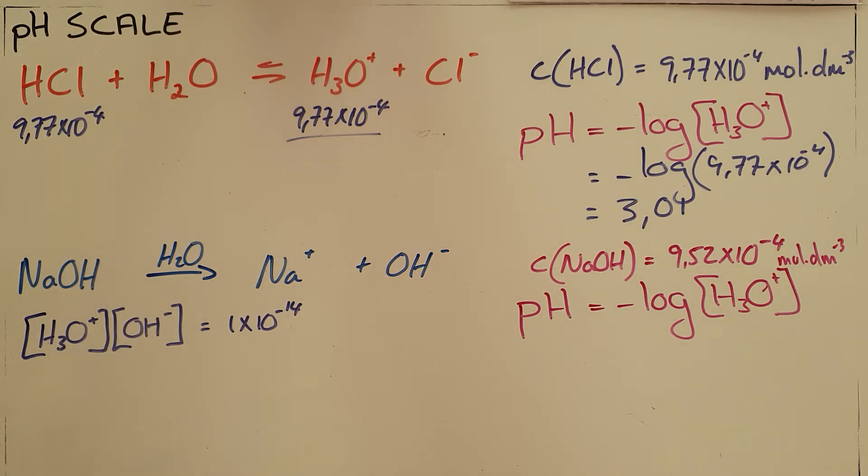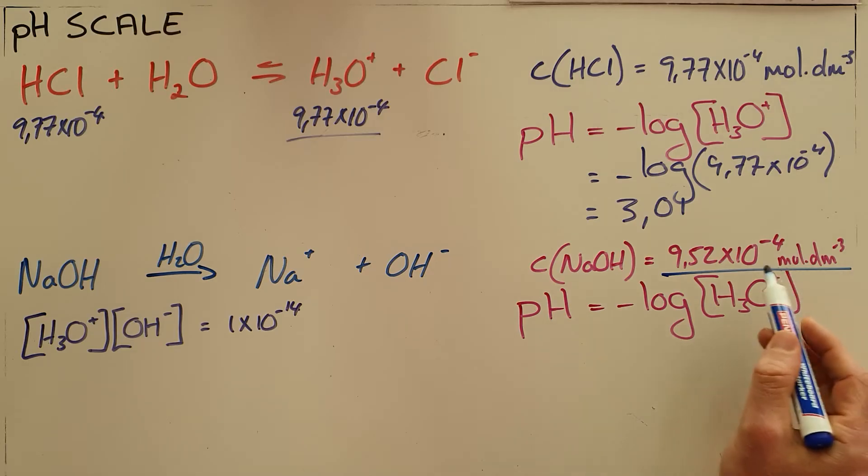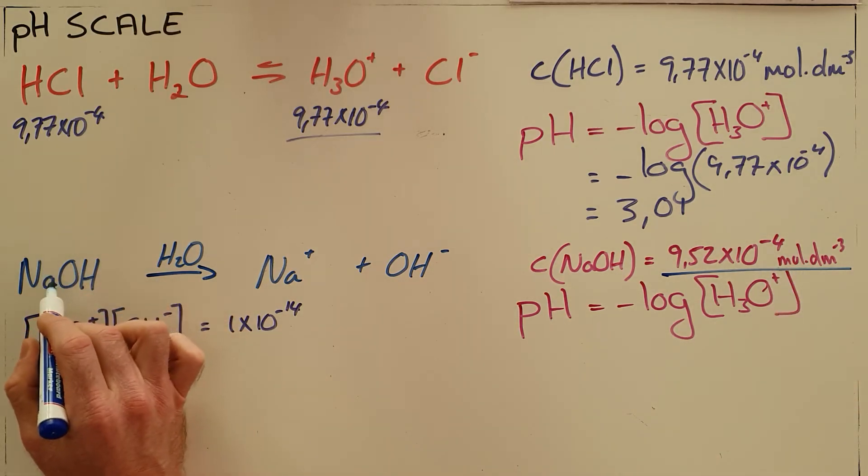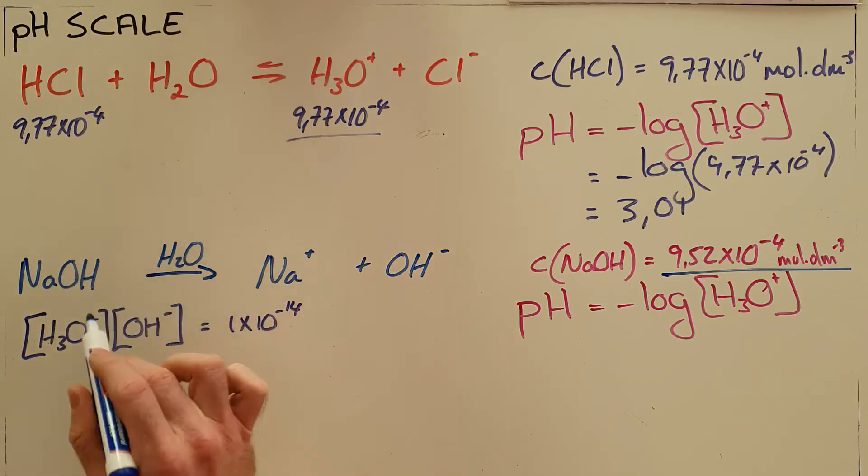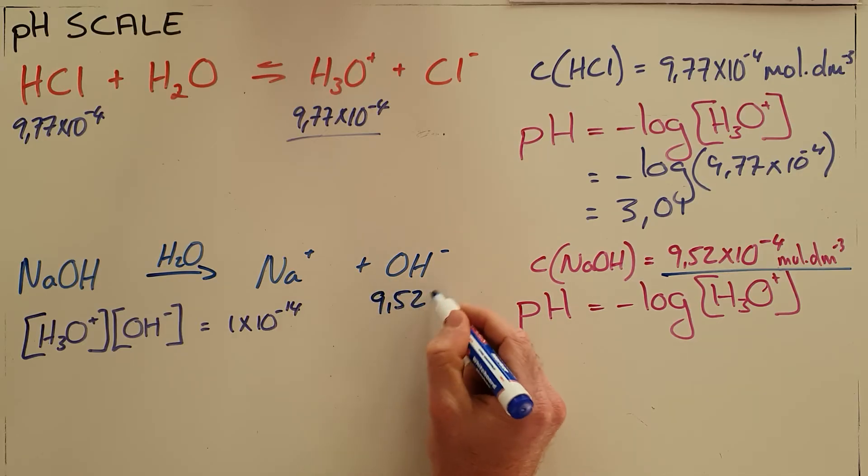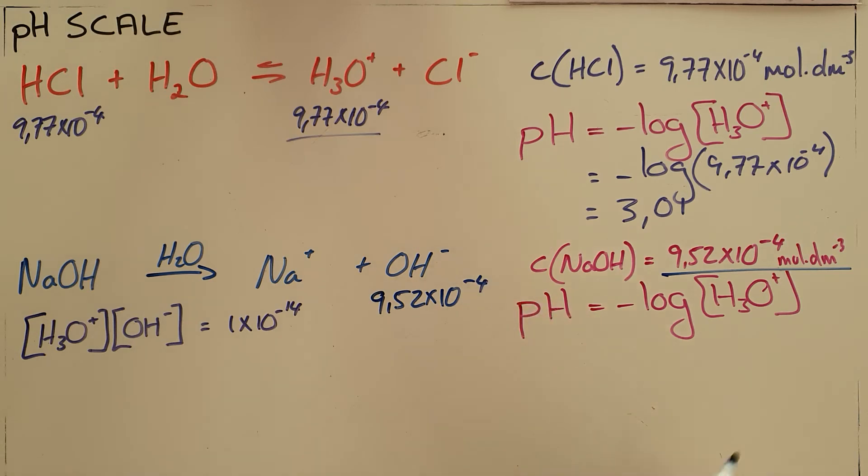The bases are slightly more complicated in that we have a certain amount of sodium hydroxide which we know is also a strong base, which means that it will dissociate completely in water. So we've been given the concentration of sodium hydroxide. Again, the ratio of sodium hydroxide to hydroxide is one to one and it dissociates completely, so we can then safely say that the concentration of hydroxide must then be 9.52 times 10 to the minus 4 moles per cubic decimeter.